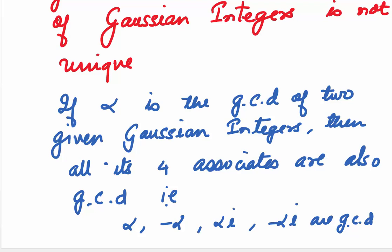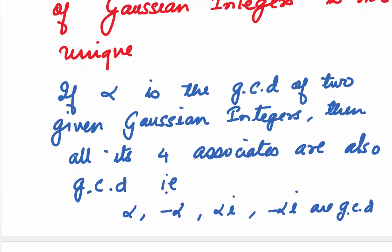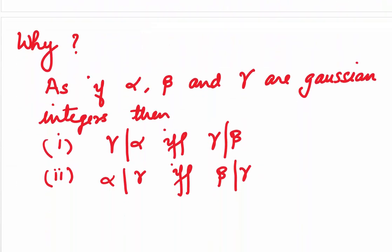You know that when we multiply by 1, minus 1, i and minus i, we get the associates of a Gaussian integer. We have already done in the previous video. You can always check. Now, why does it happen?